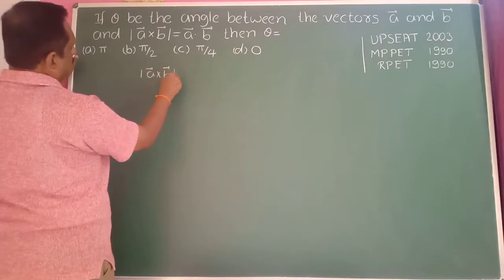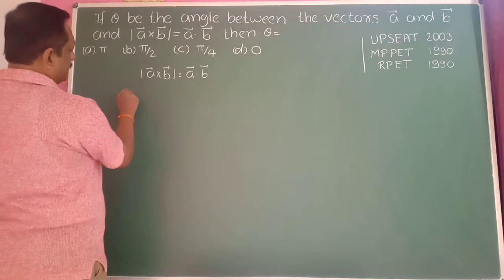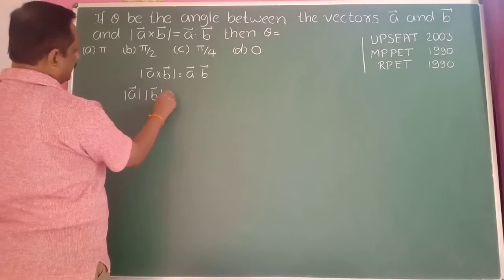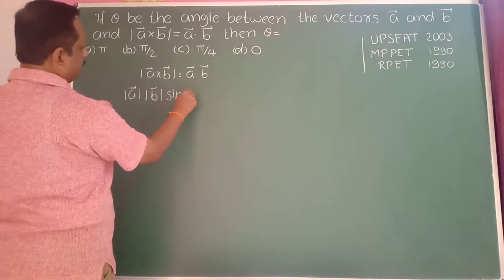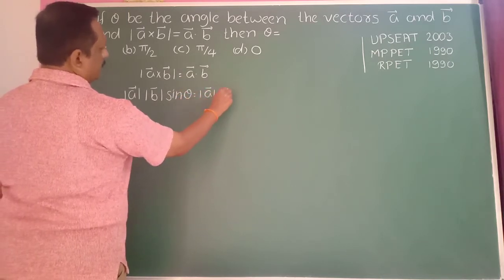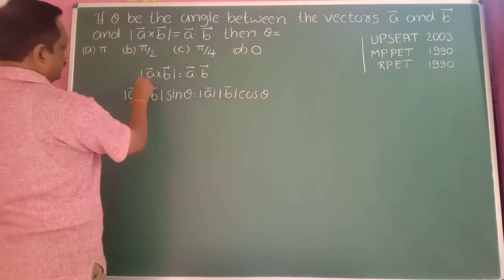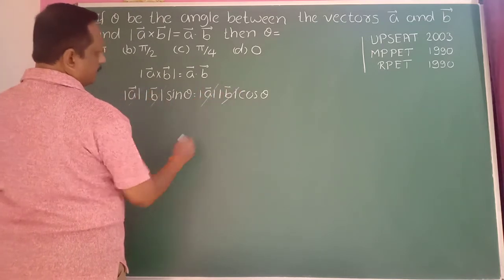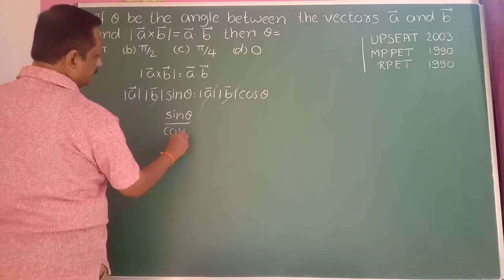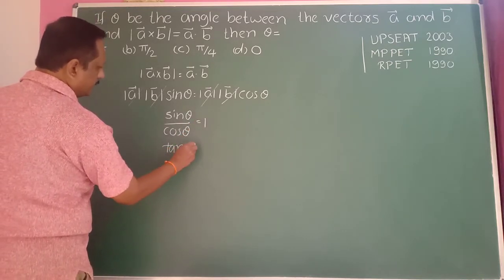Modulus of a-bar cross b-bar equals modulus of a-bar into modulus of b-bar into sin(theta), and a-bar dot b-bar equals modulus of a-bar into modulus of b-bar into cos(theta). These two terms cancel, so sin(theta) divided by cos(theta) equals 1. Since sin over cos is tan theta, tan(theta) equals 1.